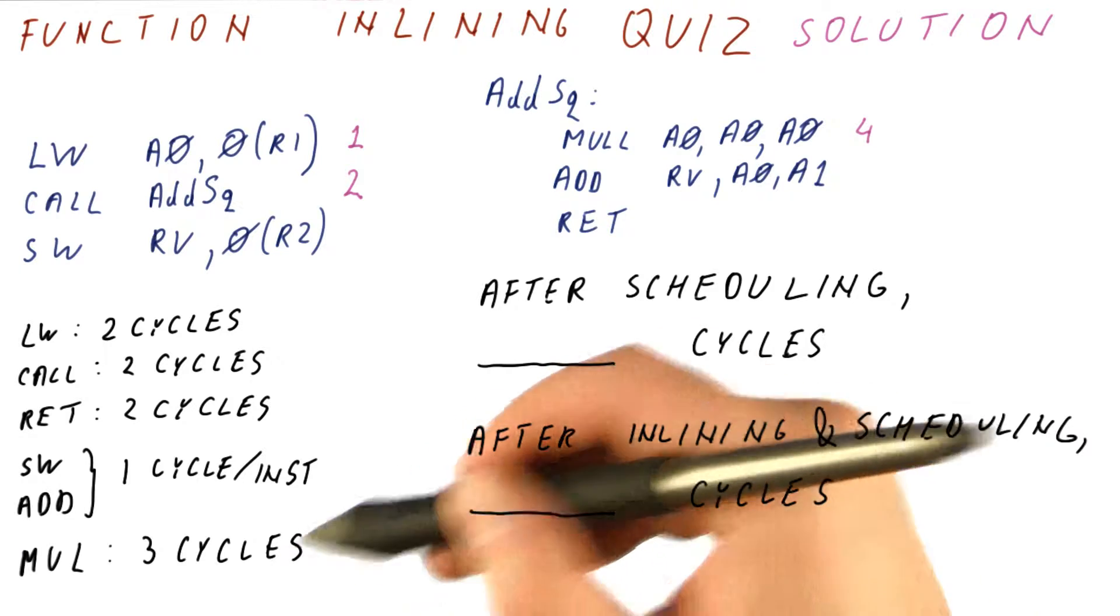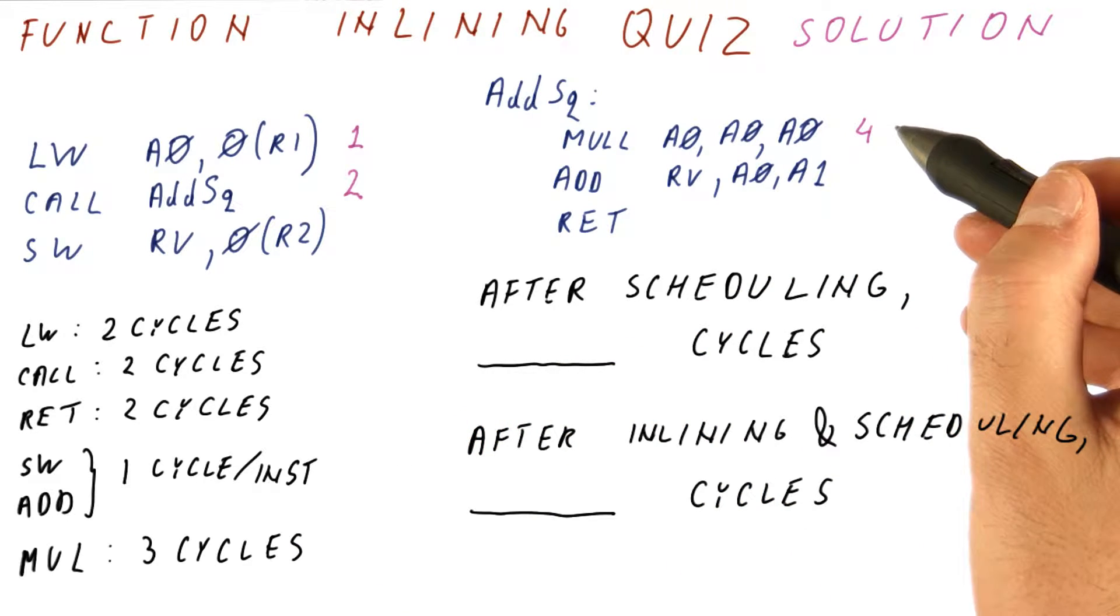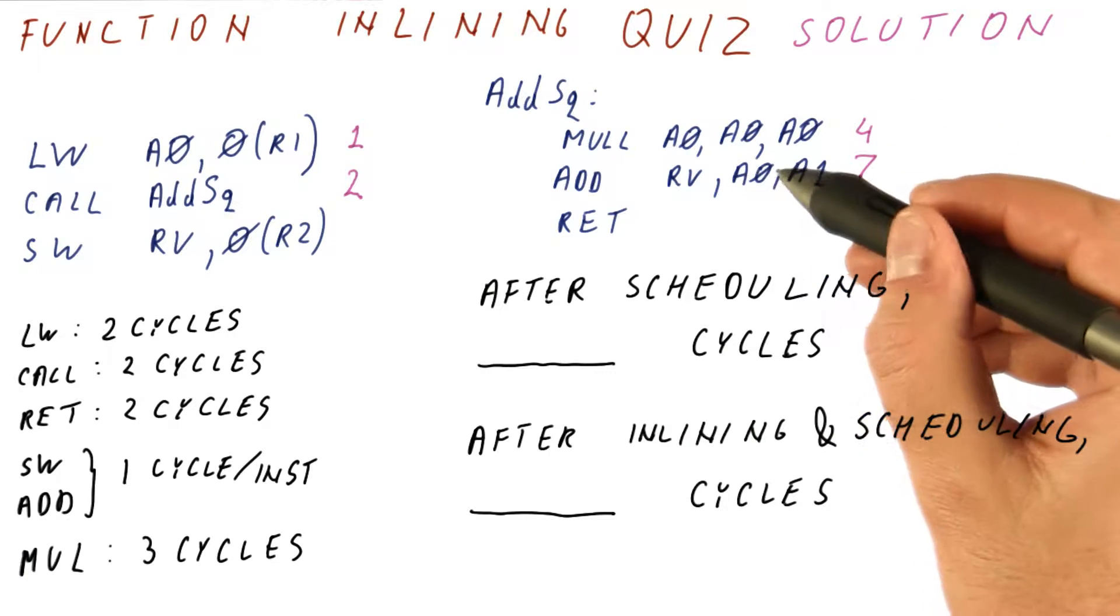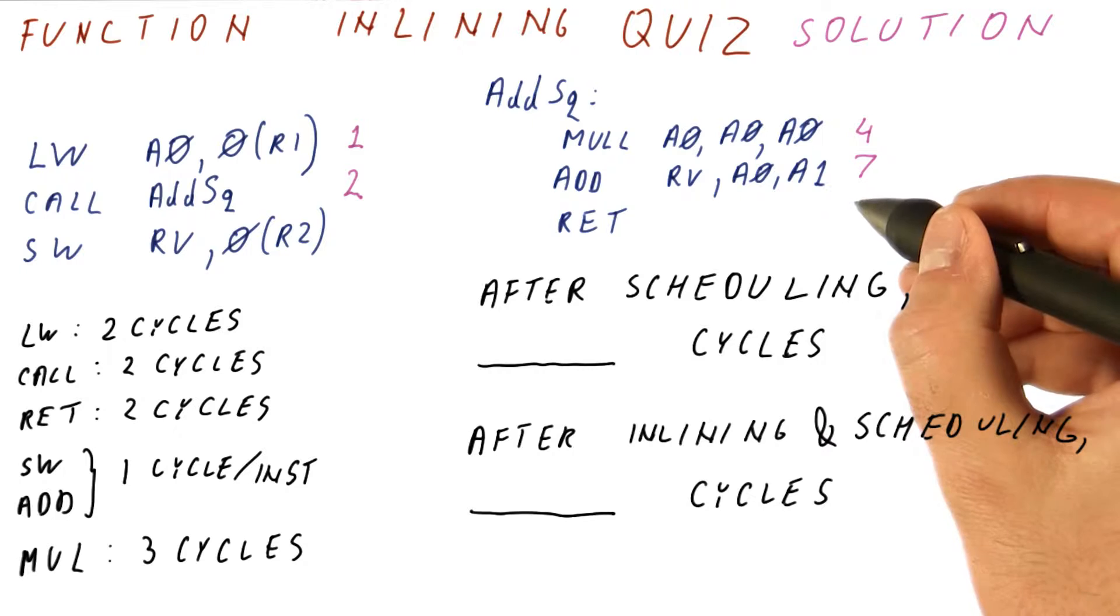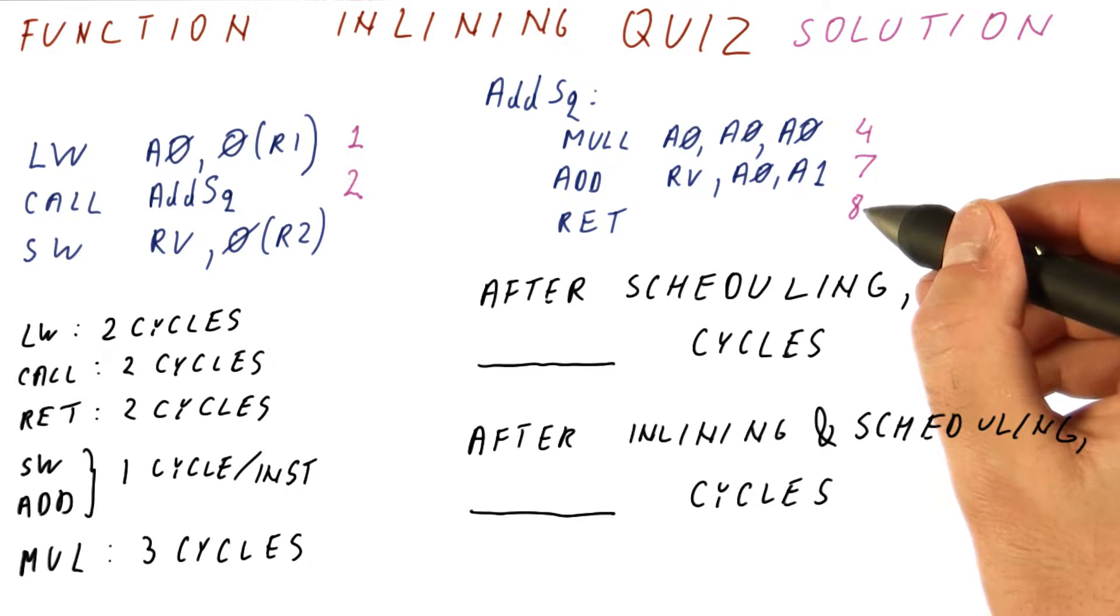The multiplication takes three cycles. So in cycles four, five, and six, the multiplication is happening, and only in cycle seven can we do this, because it's using the result of this instruction. We can do the return immediately afterwards. So return now is happening in cycles eight and nine.